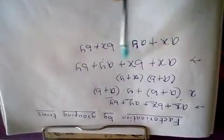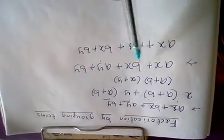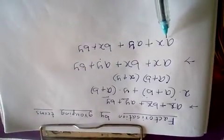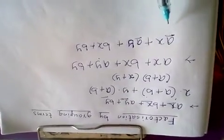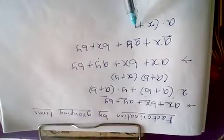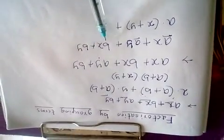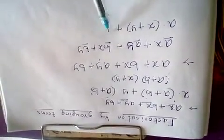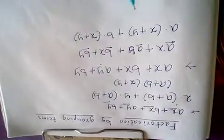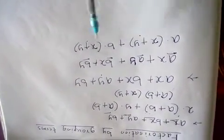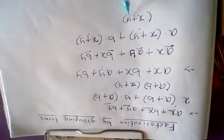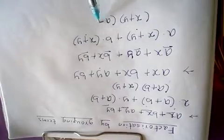After regrouping, in the first two terms A is a common factor. By taking A common, the remaining factors are X plus Y. In the last two terms, B is a common factor; by taking B common, the remaining factors are X plus Y. Now X plus Y is a common factor. By taking X plus Y common, the remaining factor is A plus B. So we can do this problem in two different ways and get the same result.